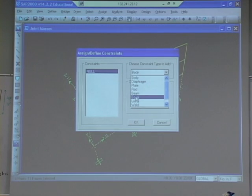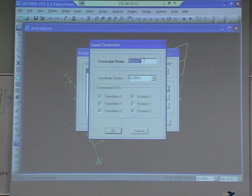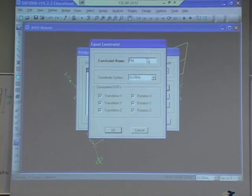So we're going to go here and go to an equal constraint. So we're assigning a constraint and it's called equal, which means we get equal displacement. We're going to call this one floor two, and we're only going to restrain—or constrain, not restrain—but constrain translation in the x direction. So that just means that all these nodes have to move together equally in the x direction.